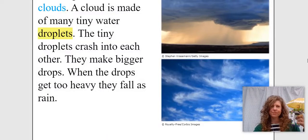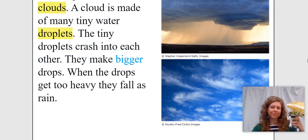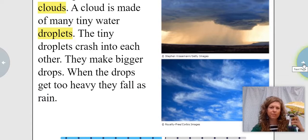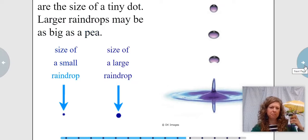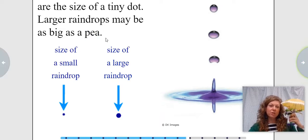Raindrops come from clouds. A cloud is made of many tiny water droplets. The tiny droplets crash into each other. They make bigger drops. When the drops get too heavy, they fall as rain. Raindrops come from clouds — good to remember. The smallest raindrops are the size of a tiny dot. Larger raindrops may be as big as a pea. Our illustrations are showing us the sizes of raindrops.